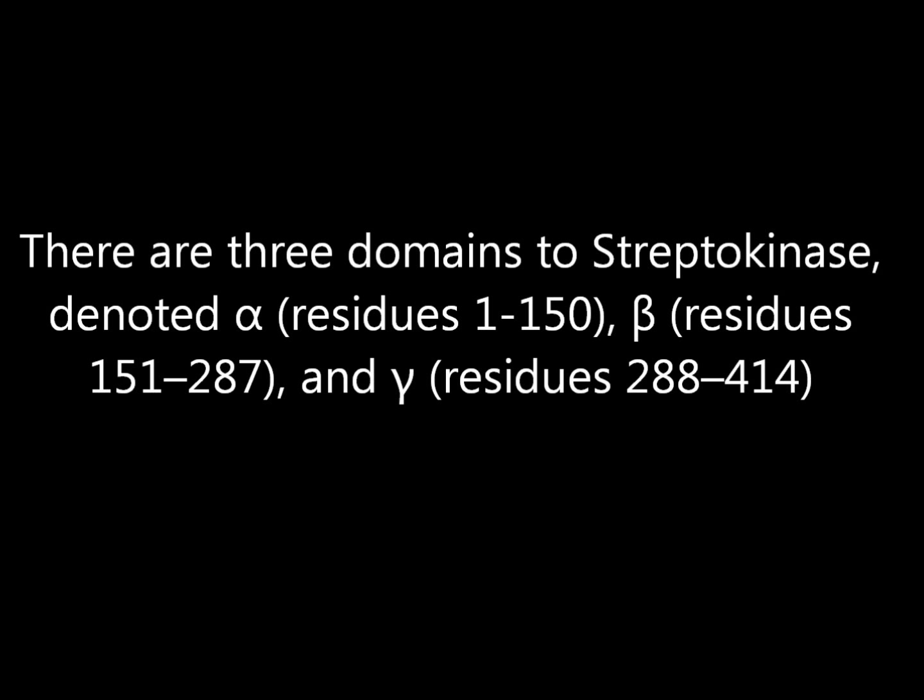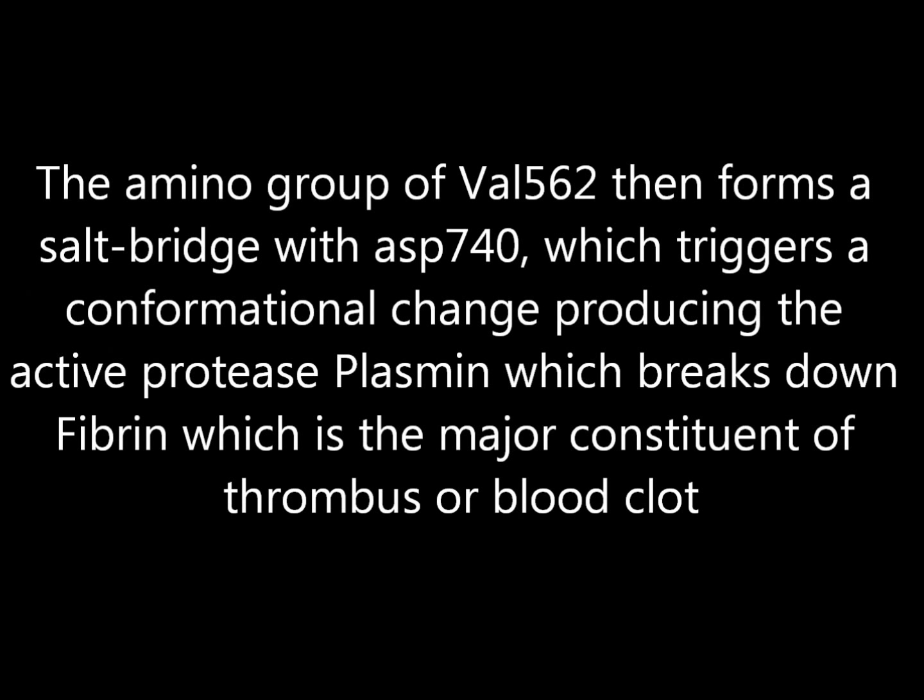There are three domains of Streptokinase, denoted alpha, beta, and gamma. Each domain binds plasminogen, although none can activate plasminogen independently. The usual activation of plasminogen is by proteolysis at ARG-561 to VAL-562. The amino group of VAL-562 then forms a salt bridge with ASP-740, which triggers a conformational change, producing the active protease plasmin, which breaks down fibrin — the major constituent of thrombus, or blood clots.